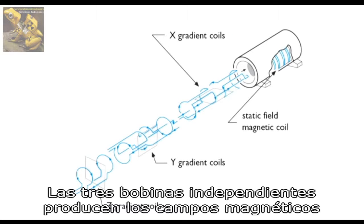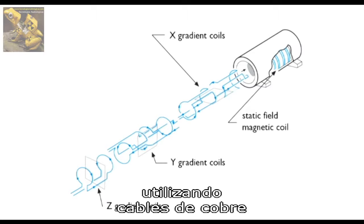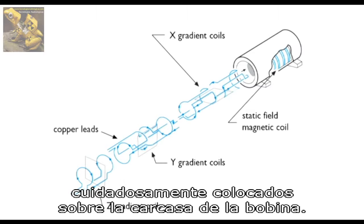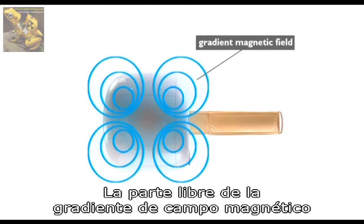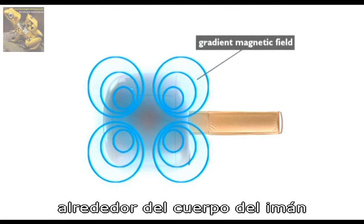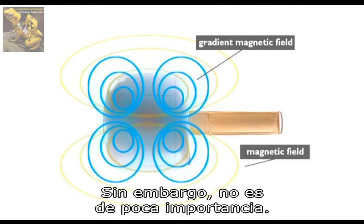The three independent gradient coils generate the gradient magnetic fields for each of the three orthogonal directions and are created by copper leads carefully positioned on the coil housing. The stray field of the gradient magnetic field outside the magnet bore is much smaller than that of the main magnet, but may not be neglected.